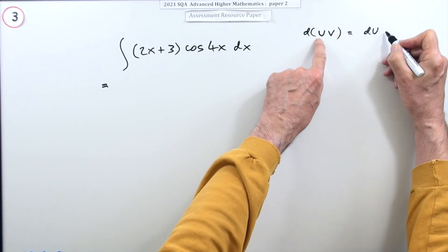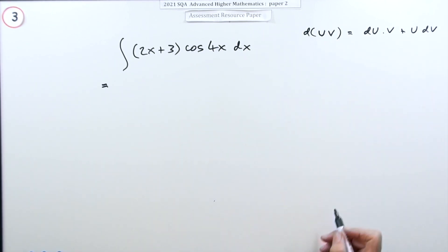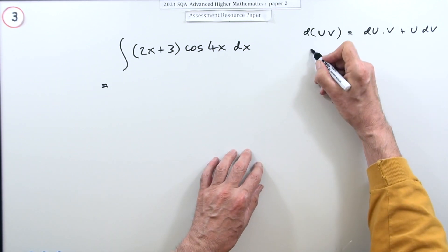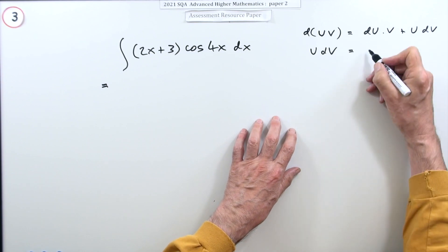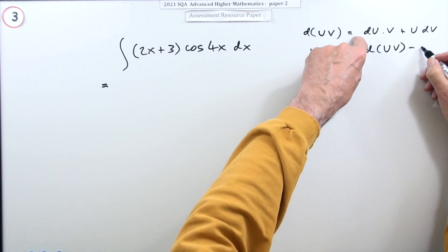Then the way you do it is you differentiate one, leave the other alone, then leave that alone and differentiate that. Now you can swap that around so that it looks like this: u, that's the one that's been differentiated, that would be equal to this minus the other one.